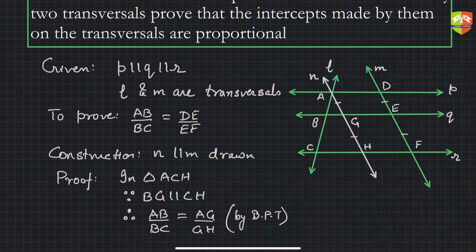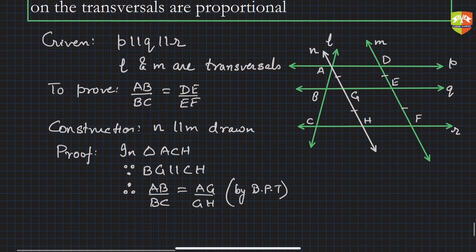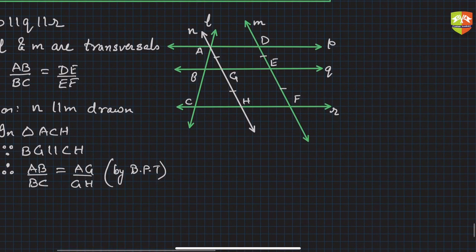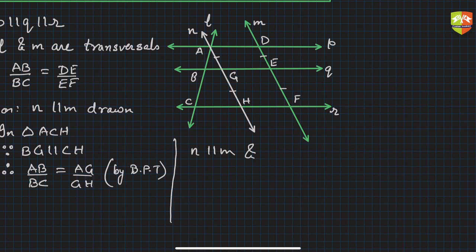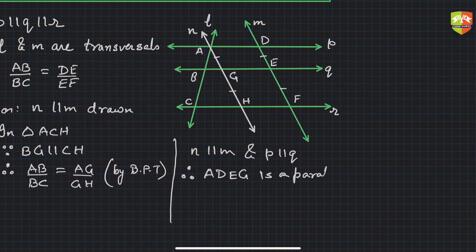Since N is parallel to M as well as P is parallel to Q, we can conclude that quadrilateral ADEG is a parallelogram. Since opposite sides of a parallelogram are equal, we get AG = DE.